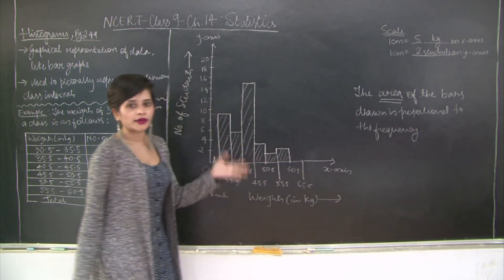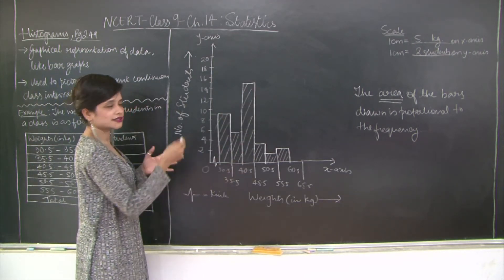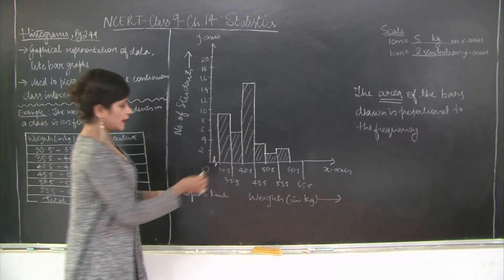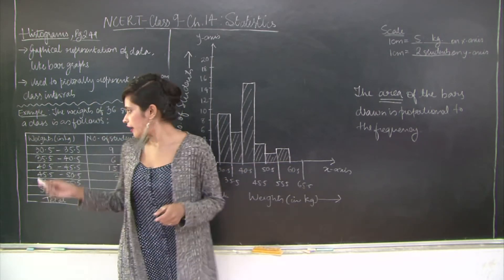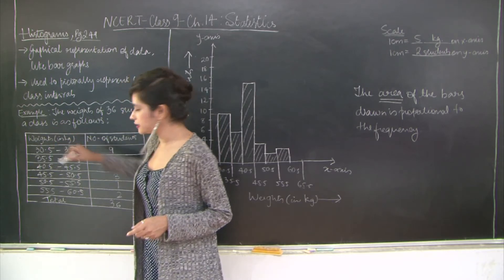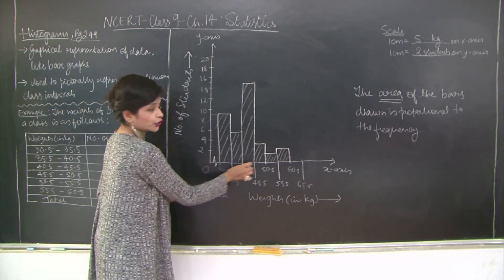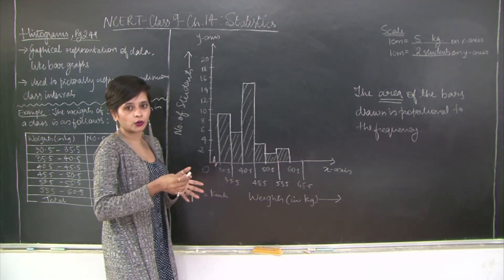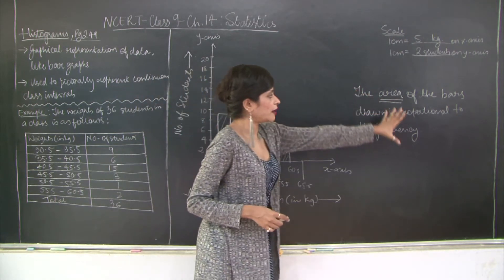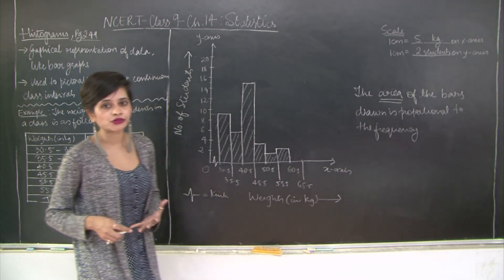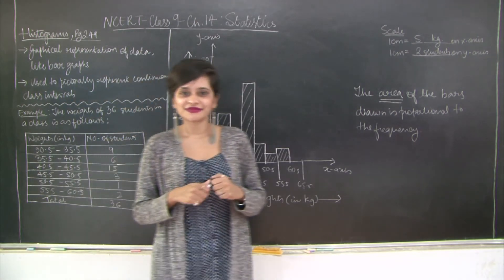You will understand this while doing histograms of variable widths. Here the bars are of fixed width with a constant difference of five between class intervals. In histograms of variable widths, the difference between upper and lower limits is not consistent, so the area of the bars drawn is proportional to the frequency. We will look at variable width histograms in the next lecture.